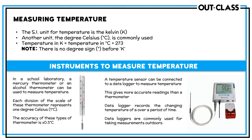To measure temperature, the main instruments we commonly use in labs are thermometers — mercury thermometer or alcohol thermometer. We can also use temperature sensors attached to data loggers, which can record temperature over a period of time at regular intervals — very useful and accurate. The SI unit for temperature is Kelvin, but the commonly used unit is degree Celsius. Temperature in Kelvin equals temperature in degree Celsius plus 273. The most commonly used apparatus to measure temperature is the thermometer.